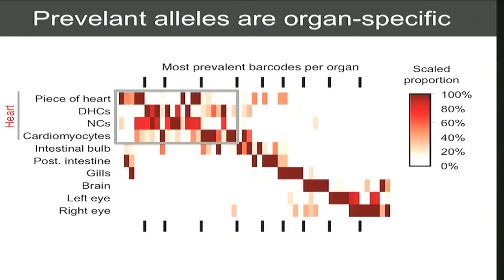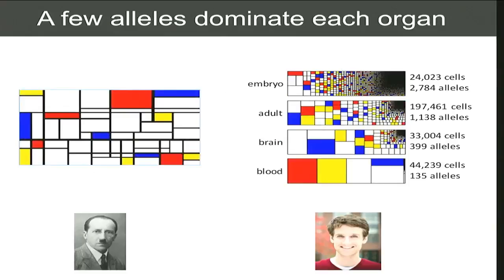As a hat tip to our afternoon experience yesterday, when putting together the paper we initially tried to represent this as Mondrian-type art. Jamie Gagnon, the postdoc I mentioned, loved this as did I, and we gave these nice pictures showing the diversity in terms of the embryo versus the adult, and then looking at specific organs like blood which has very little diversity, or brain which also has a few alleles explaining most of it. But we were outvoted by our colleagues and this didn't end up making it into the paper.